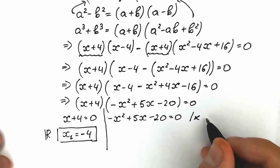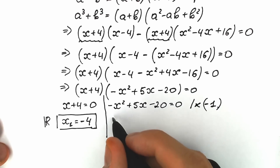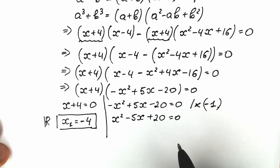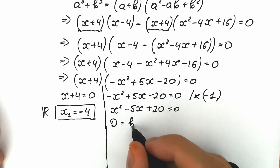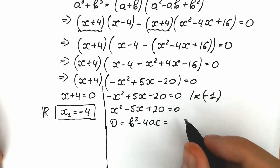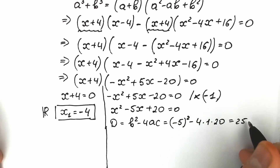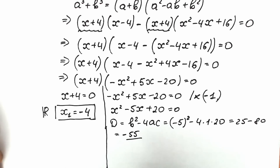Now let's solve the second equation. We multiply both sides by minus one to get x squared minus 5x plus 20 equals zero. This is a standard quadratic. The discriminant is D equals b squared minus 4ac, which gives us (minus 5) squared minus 4 times 1 times 20 equals 25 minus 80 equals minus 55. The discriminant is negative, so we have two complex roots.